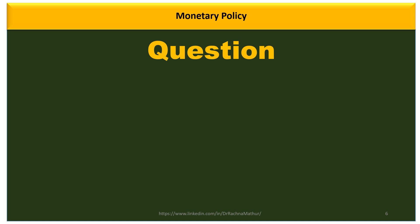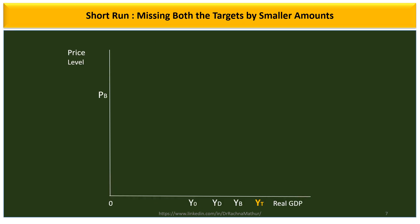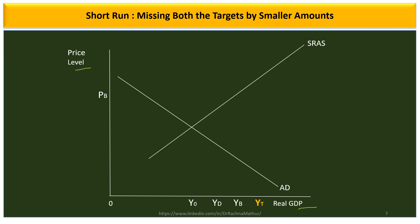A very important question arises here: in the short run, monetary policy might be able to achieve either the price level target or the output target, but not both. The reason is that the central bank has control only over aggregate demand — it has no control over aggregate supply in the economy. The central bank can influence aggregate demand by adjusting monetary policy and changing liquidity, but it cannot control the aggregate supply of factors. Because of this, the central bank is forced to compromise with its targets.